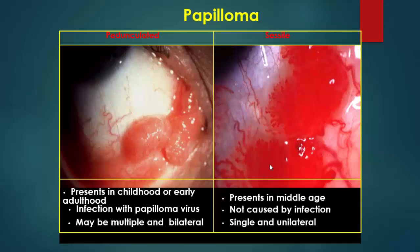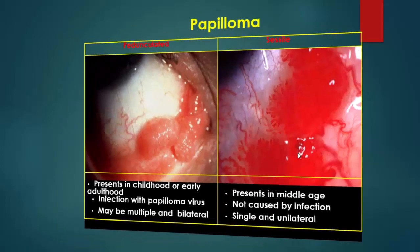Papilloma is presented as a pedunculated or sessile lesion. They are usually present in childhood or early adulthood, caused by infection with human papillomavirus, and may be multiple and bilateral. In the sessile lesion, it is mostly presented in middle age, not caused by infection, and is single and unilateral. This is the pedunculated form and here is the sessile form.